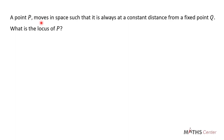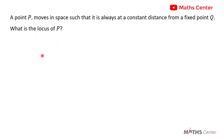A point P moves in space such that it is always at a constant distance from a point K. What is the locus of P? Let's try and analyze it. We have two points: point P and point K. I'm going to use this red circle to represent point P and this blue circle to represent point K.